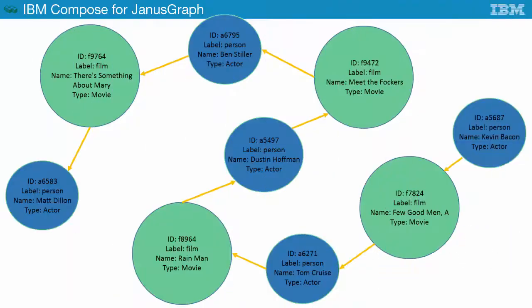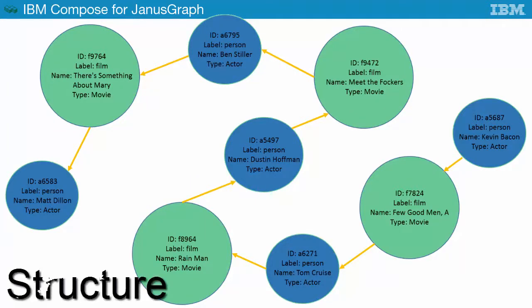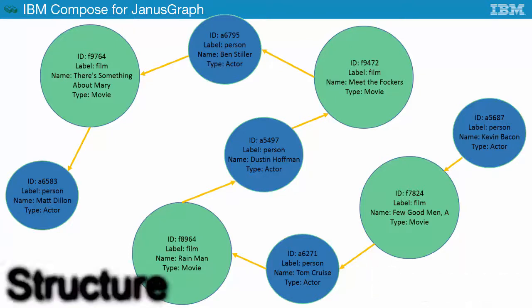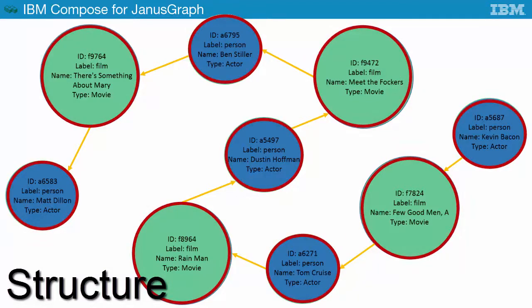Graph databases are composed of two fundamental pieces: the structure, or property graph, and the process, or traversal. The property graph uses vertices, edges, and properties to represent and store data. Vertices are a fundamental data element that represent an entity like people, businesses, or accounts.